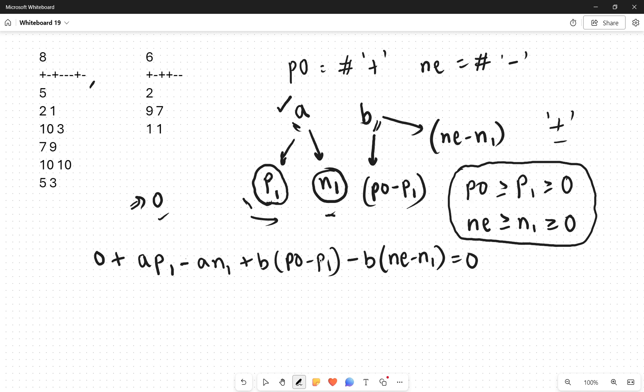Simplifying this, we know a, we know b, we know PO, we know NE. What we will try to do is get p1 and n1 on one side and all other variables on the other side, and we'll try to derive some range for the values a certain expression can take which is composed of p1 and n1.